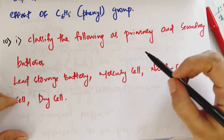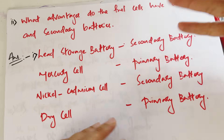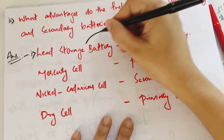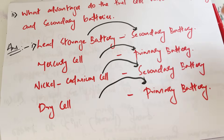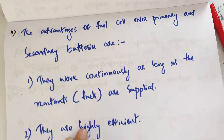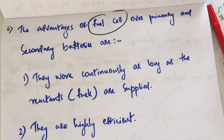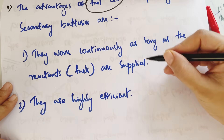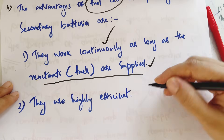Let's classify the following as primary and secondary batteries: lead storage battery — secondary; mercury cell — primary; nickel-cadmium — secondary; dry cell — primary. Advantages of fuel cells: they work continuously as long as reactants are supplied and are highly efficient.